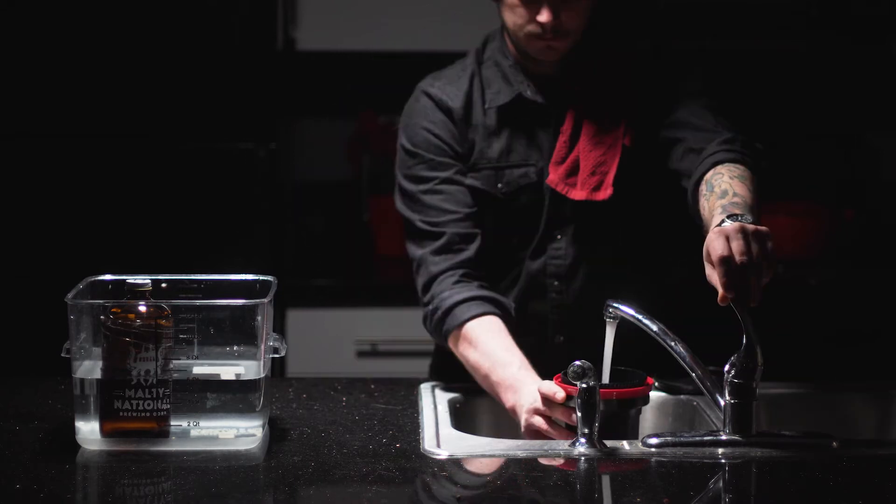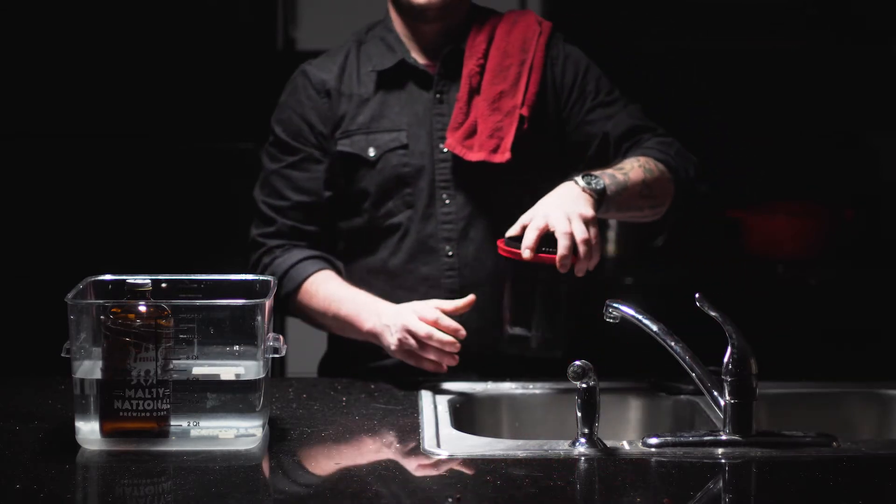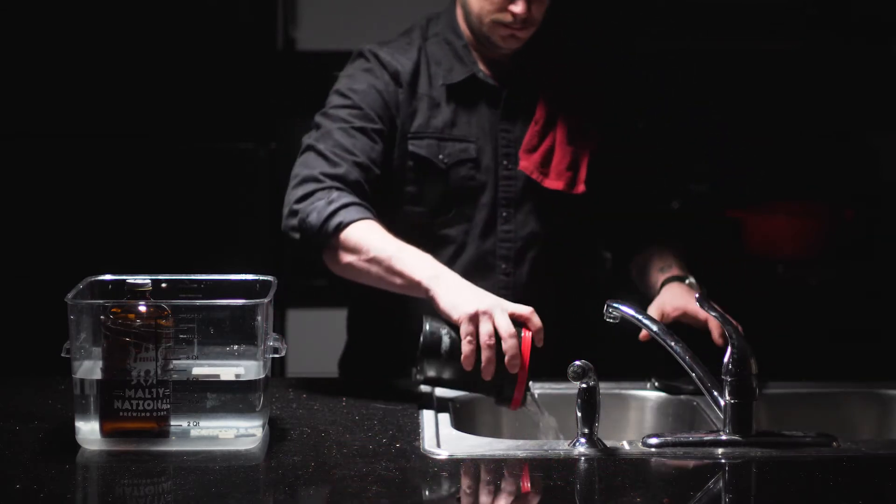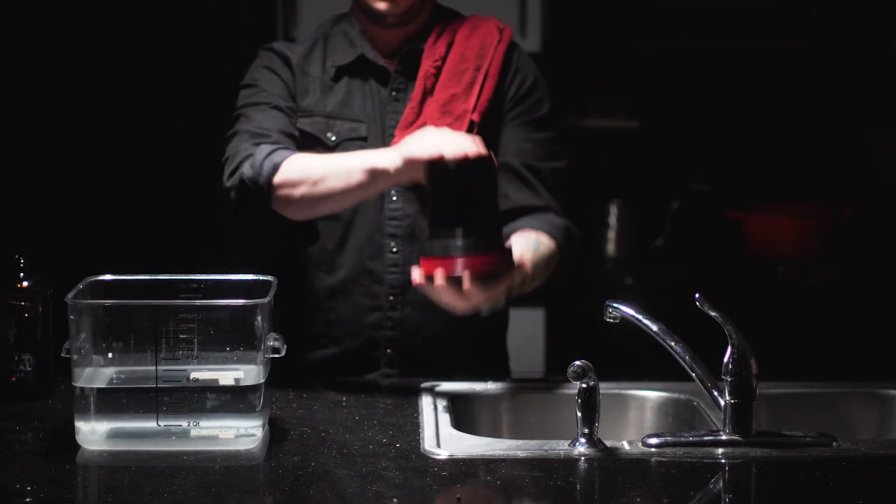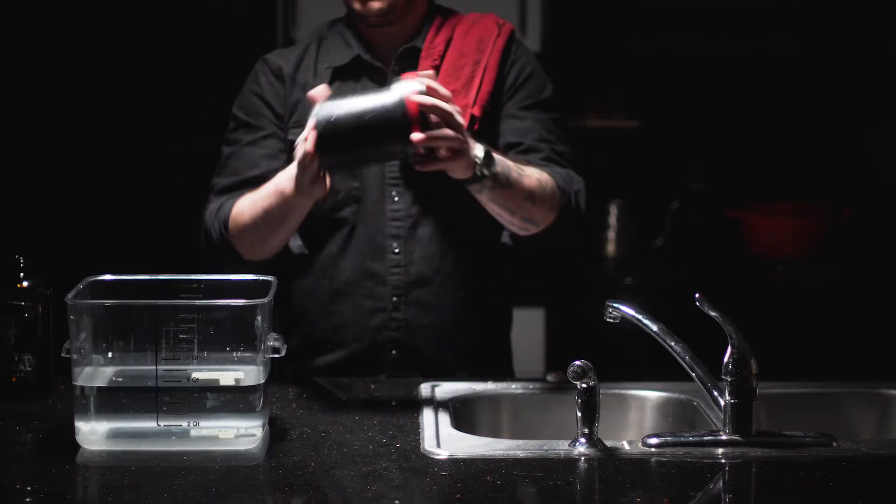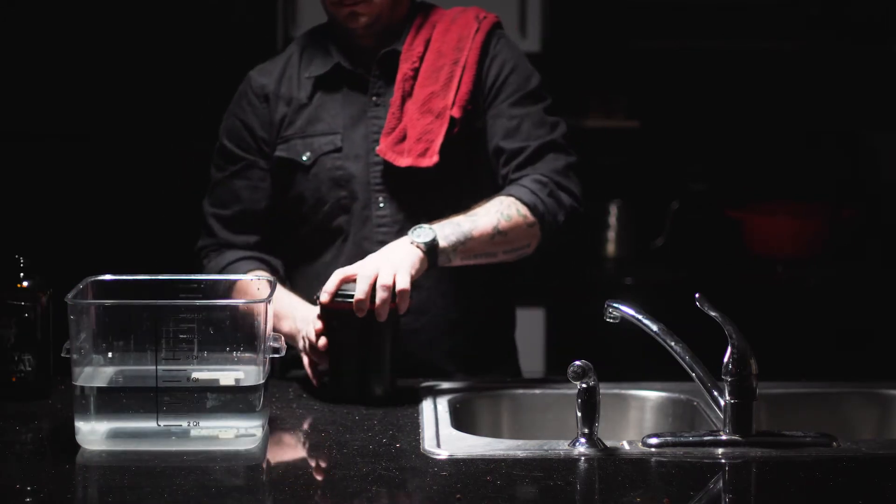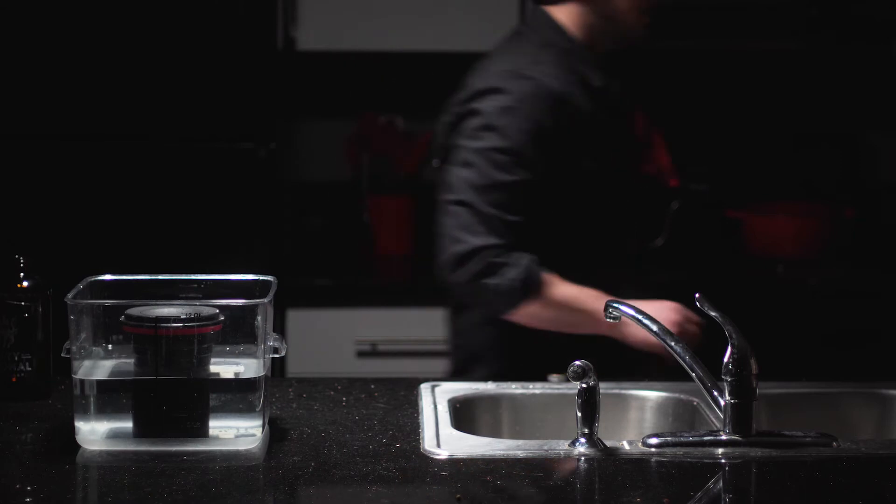Pour out the spent developer and fill the tank with water. Invert the tank a couple times or just swish it around a little bit. Pour in the fixer and get that lid on it tightly. Then we agitate for one minute, give the tank a quick tap, release any gas buildup and throw it back in the water bath for one minute.